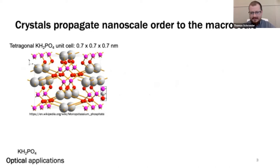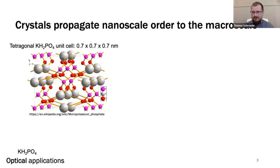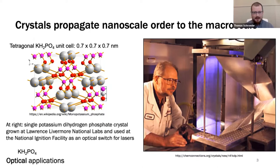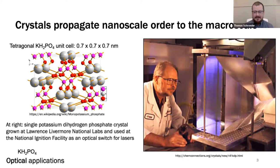To start with an example: what you see on your screen is the unit cell of KDP — potassium dihydrogen phosphate. The unit cell of KDP is about seven angstroms to a side. It's tetragonal — a very small volume, but it can be propagated to a very large volume. This is a KDP crystal on the meter scale, grown very carefully over a long time to attain optical purity for use at the National Ignition Facility, where it's sliced into slabs and used as an optical switch for lasers.